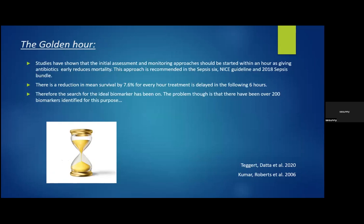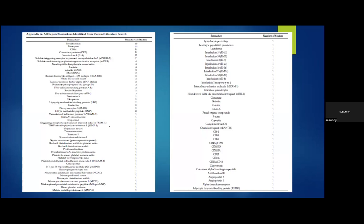There's the concept of the golden hour — time is heart, time is brain, time is kidney — and the same applies to infections. Studies have shown that initial assessment and monitoring should start within an hour, as giving antibiotics early reduces mortality. This approach is recommended in the Sepsis-6 NICE guidelines and the 2018 sepsis bundle. There is a reduction in mean survival by 7.6% for every hour treatment is delayed in the following six hours. The problem, however, is that there have been over 200 biomarkers identified for this purpose, giving you an idea of the vast number studied in the current literature.